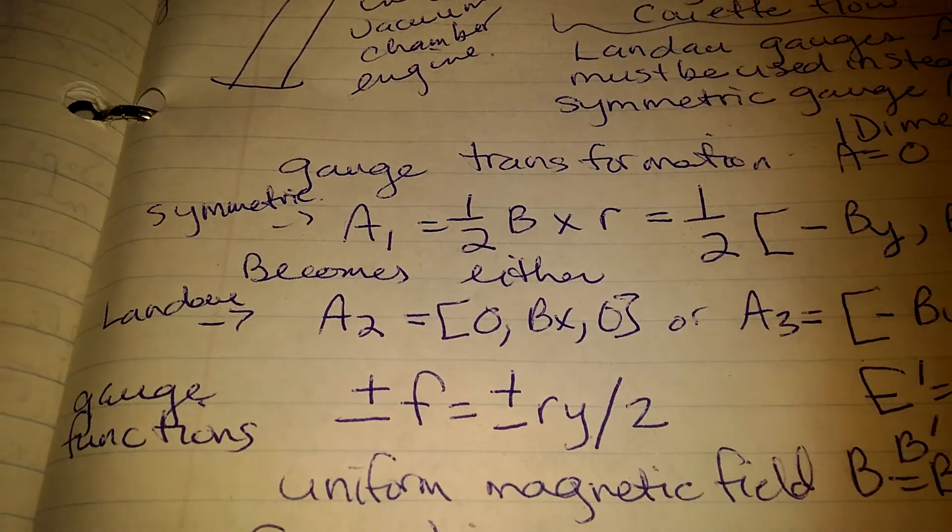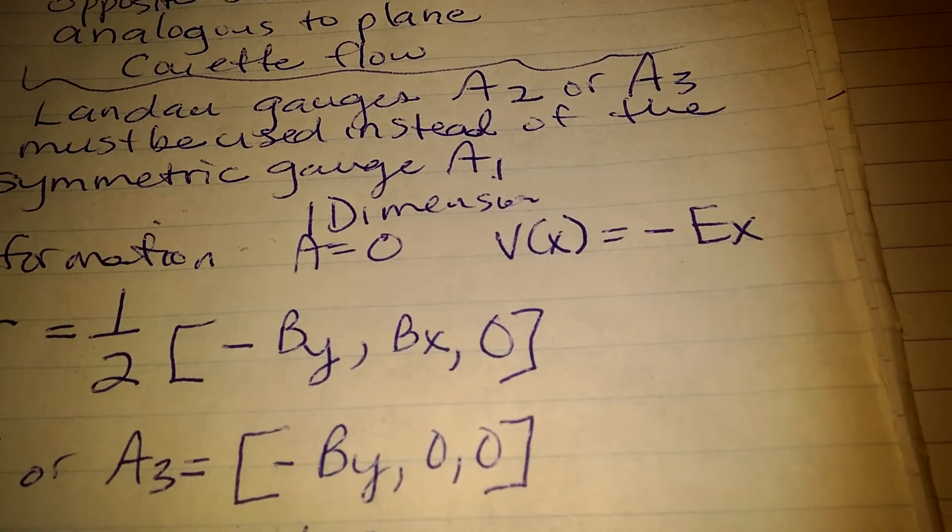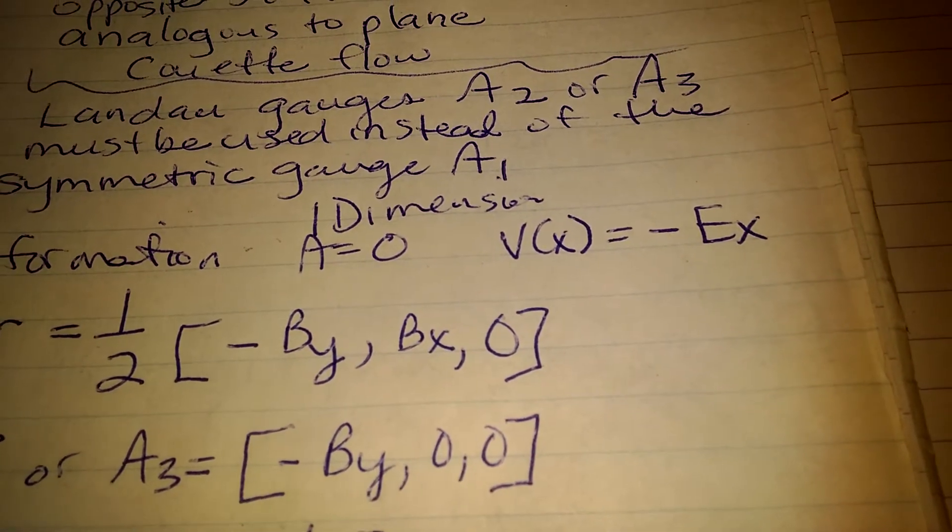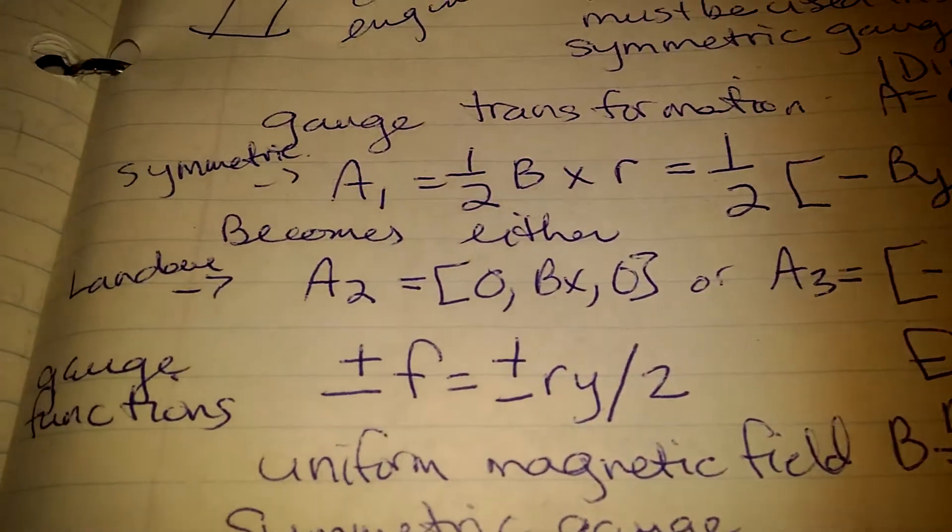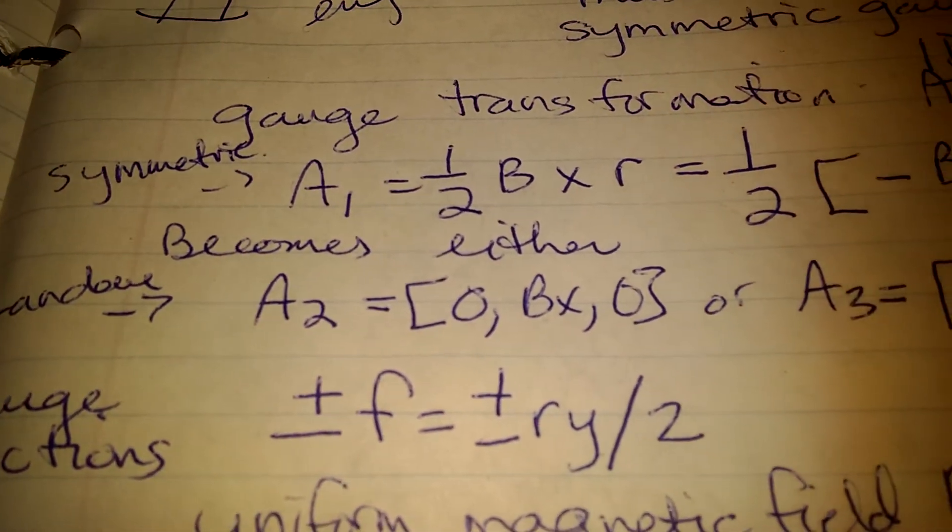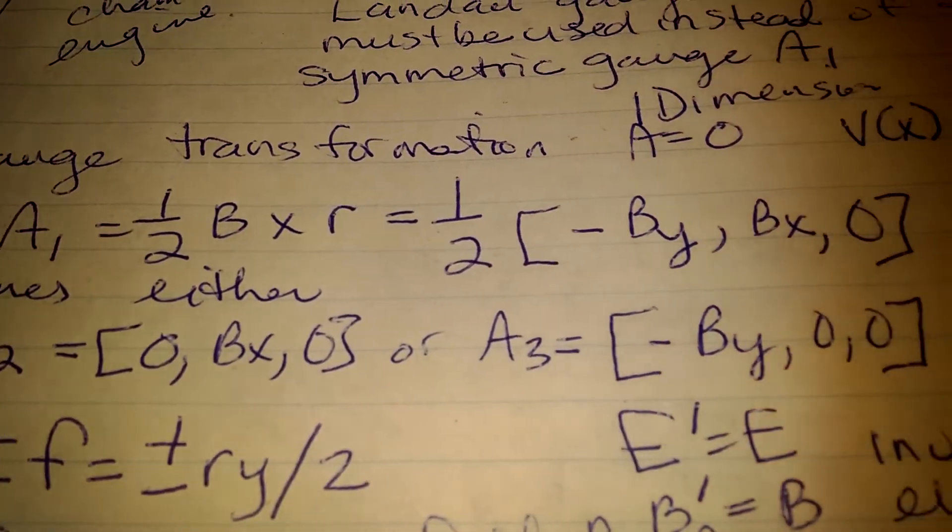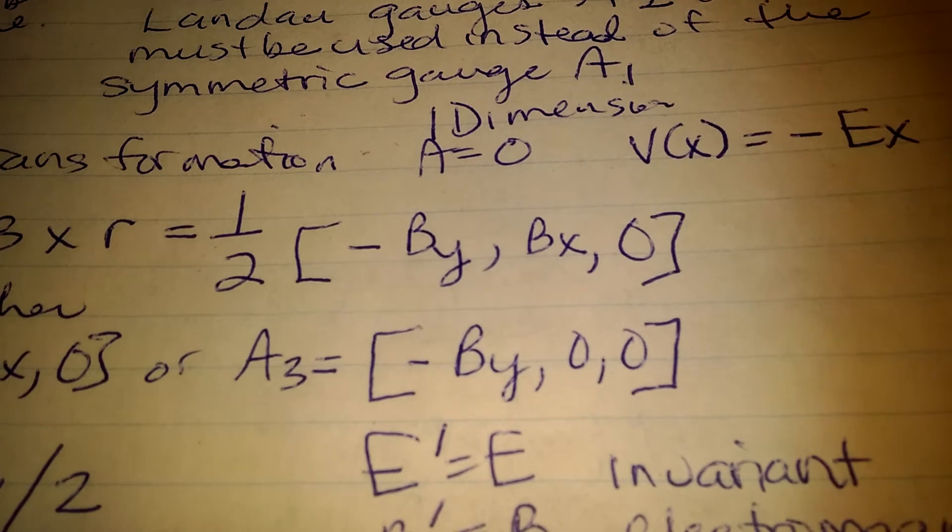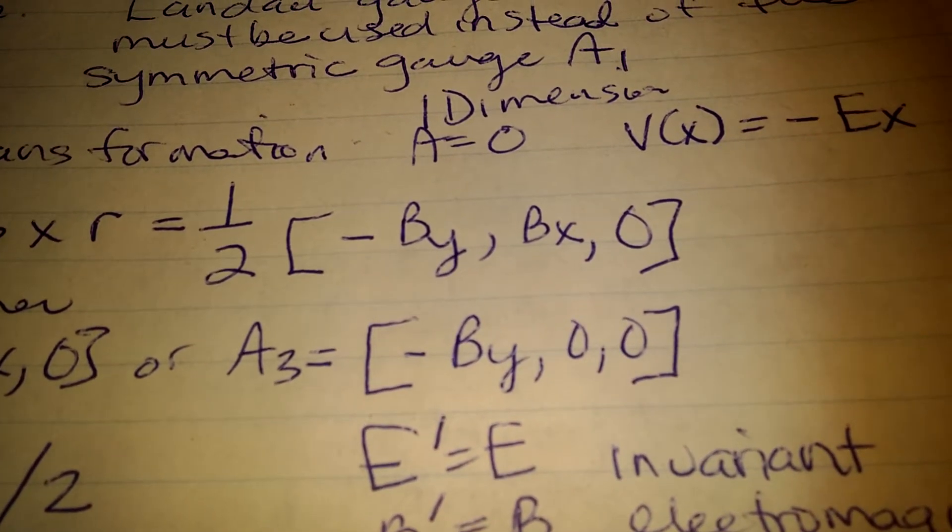And then you got your gauge transformation. One dimension, a equals 0, v to, and x in the brackets equals minus ex. Then symmetric is a1 equals 1 half b times r equals 1 half, and then in brackets, minus by, bx, and a 0.